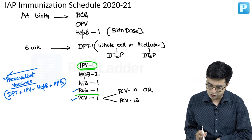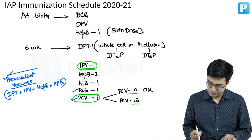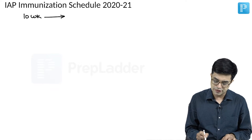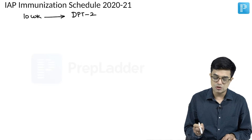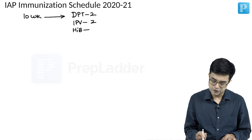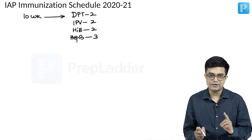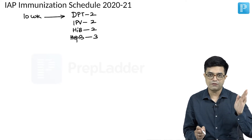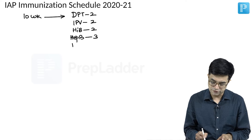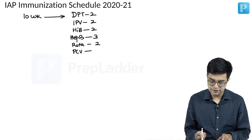Another major point: PCV can be used in either 10 or 13 valent form. At 10 weeks, a similar schedule is followed: DPT2 (whole cell or acellular), IPV2, Hib2, hepatitis B3 — because at birth it was dose 1, at 6 weeks it was dose 2, and at 10 weeks it is dose 3 — plus rotavirus vaccine second dose and PCV vaccine second dose.